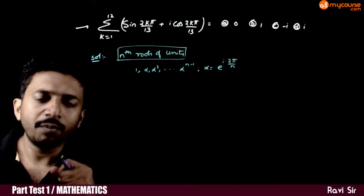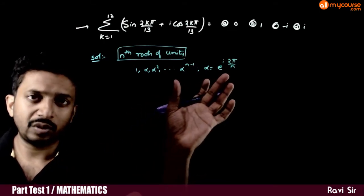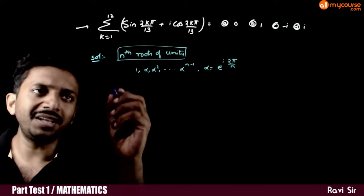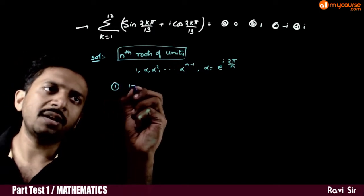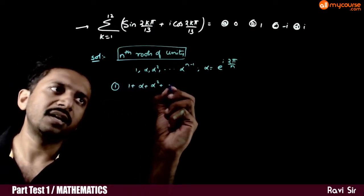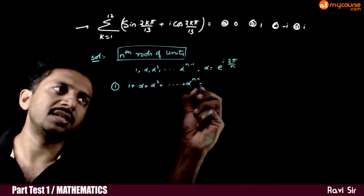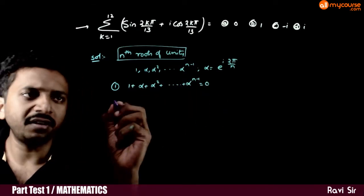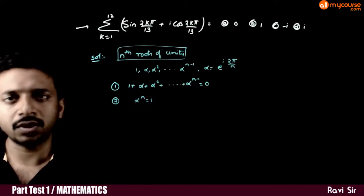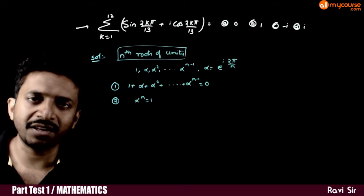What are the properties of nth roots of unity? The first property is: 1 plus alpha plus alpha squared, and so on, up to alpha power n minus 1, is equal to 0. The second property is alpha power n is equal to 1. These are the two basic properties of nth roots of unity.